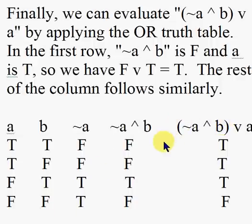In the first row, ~a ^ b is false. Now what are we doing as our second part? We're doing (~a ^ b) v a. Look where a is - it's all the way back at the beginning. That breaks down to false or true, which is true.